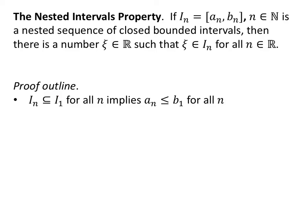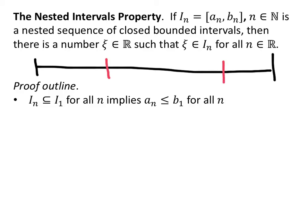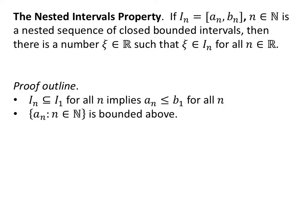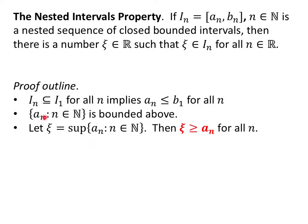First of all, we're going to look at this fact: you give me any i sub n, it's always going to be a subset of i sub 1. You give me any other interval in the sequence and it's going to be a subset of that first one. This is b sub 1, and a sub n is always to the left of that. That means b sub 1 serves as an upper bound for the set of all left-hand endpoints. If there is an upper bound, then that means it has a least upper bound. We'll call the least upper bound — the supremum — z. Because z is the supremum of all of these numbers, by the definition of supremum, z is greater than or equal to every single left-hand endpoint.